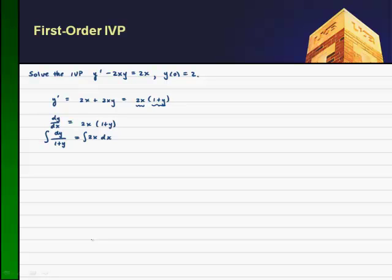And if I integrate the left-hand side, I get the natural log of the magnitude of 1 plus y equals the integral of x is just x squared over 2. And the 2 over 2 will give me 1, so I'll just get x squared plus some arbitrary constant c.